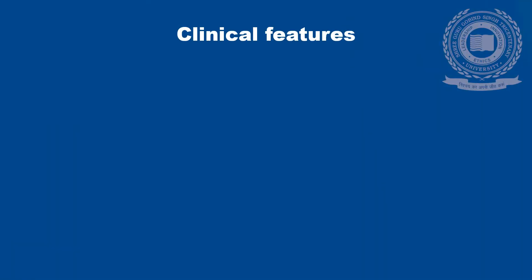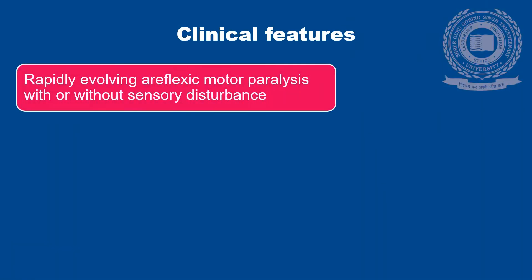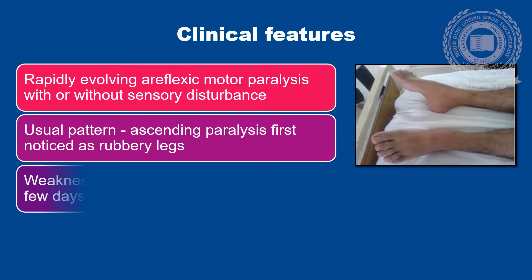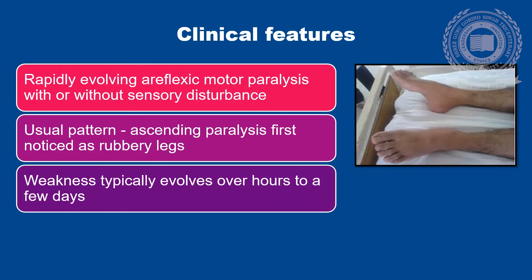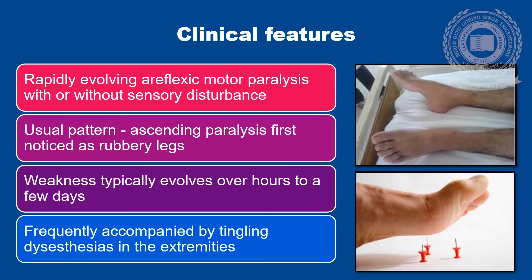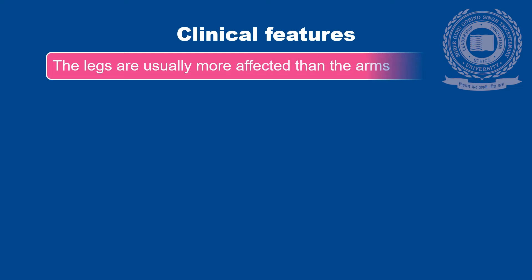Now let's discuss about the clinical features of Gulenbady Syndrome. Gulenbady Syndrome manifests as rapidly evolving areflexic motor paralysis with or without sensory disturbance. The usual pattern is an ascending paralysis that may be first noticed as rubbery legs. Weakness typically progresses over a period of few hours to days, and is frequently accompanied by tingling dysesthesias in the extremities. The legs are usually more affected than the arms.